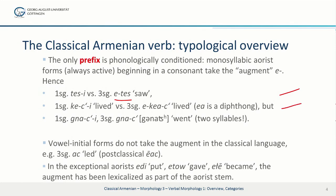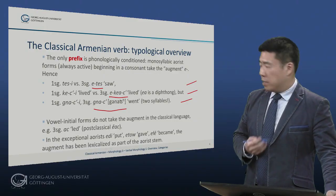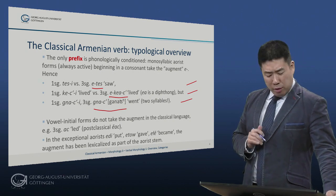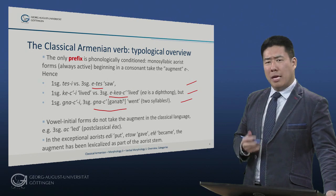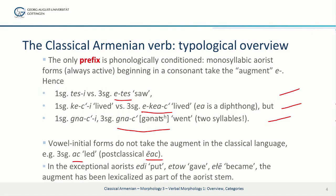Similarly, first singular ketzi, I lived, but third singular e-kjats. Recall that e-a spells a diphthong, so here too the aorist stem is a single syllable, kjats, and begins in a consonant. But in contrast, we have first singular gna-tsi, I went, third singular gna-ts, with no augment, because the stem consists of two syllables with an unwritten schwa vowel. Vowel-initial forms do not take the augment in the classical language; they do beginning in post-classical texts. So we have, for example, ats, and beginning in later times, e-ats — a post-classical form.